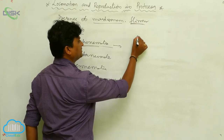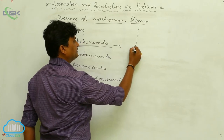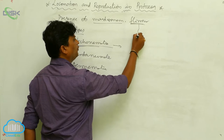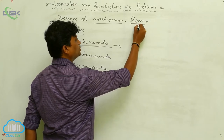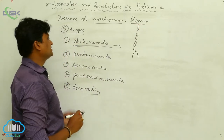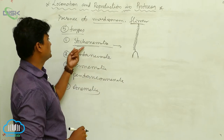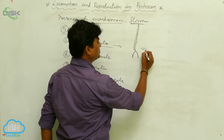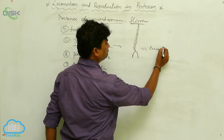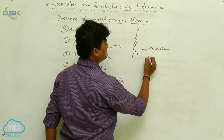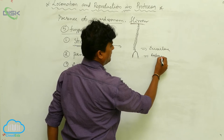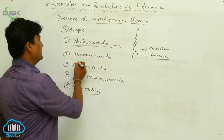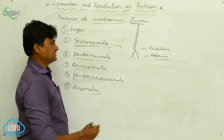Here is the basal granule and a bit of flagella — these are mastogonyms. Their orientation is to one side only. This type of flagella we consider as stichonimatic. Examples are Euglena and Astacia.